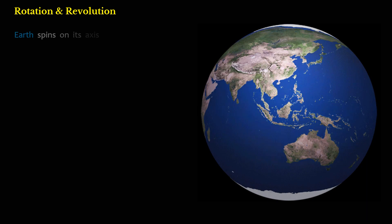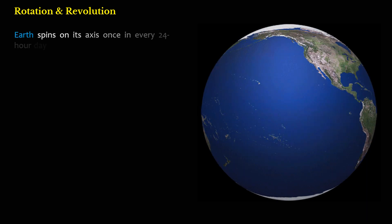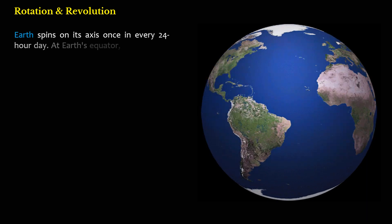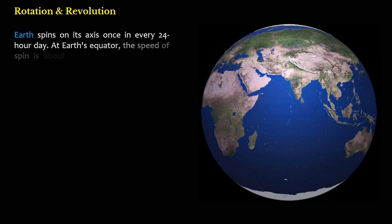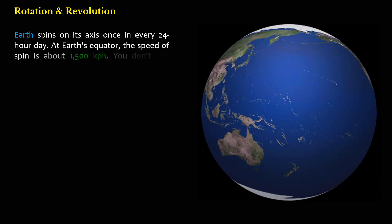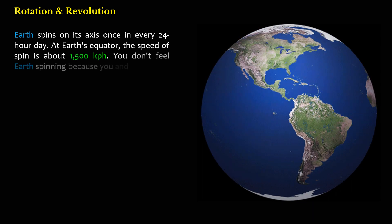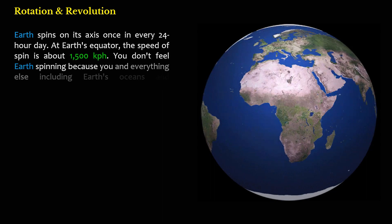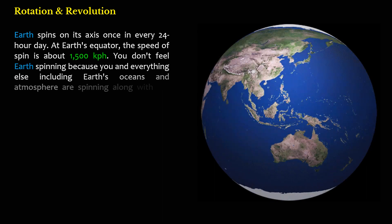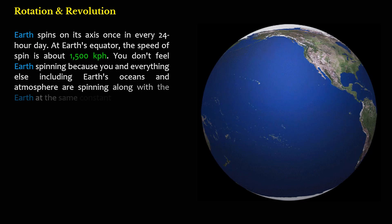Earth spins on its axis once in every 24-hour day. At Earth's equator, the speed of spin is about 1,500 km per hour. You don't feel Earth spinning because you and everything else including Earth's oceans and atmosphere are spinning along with the Earth at the same constant speed.